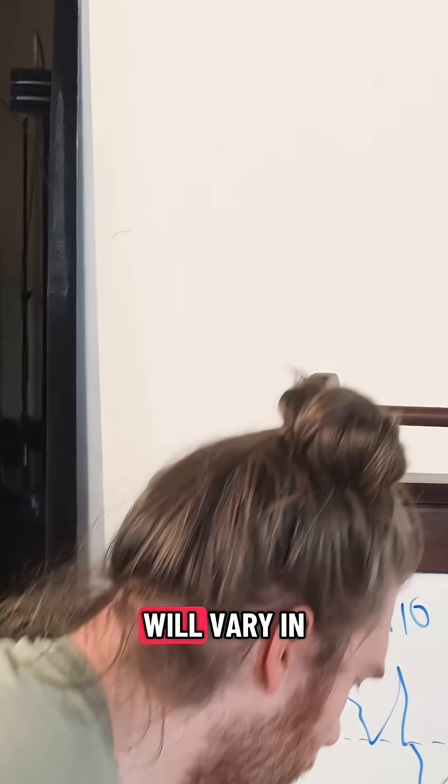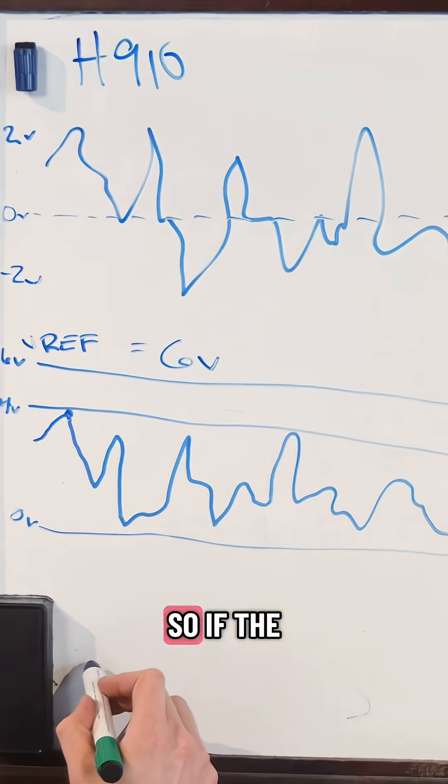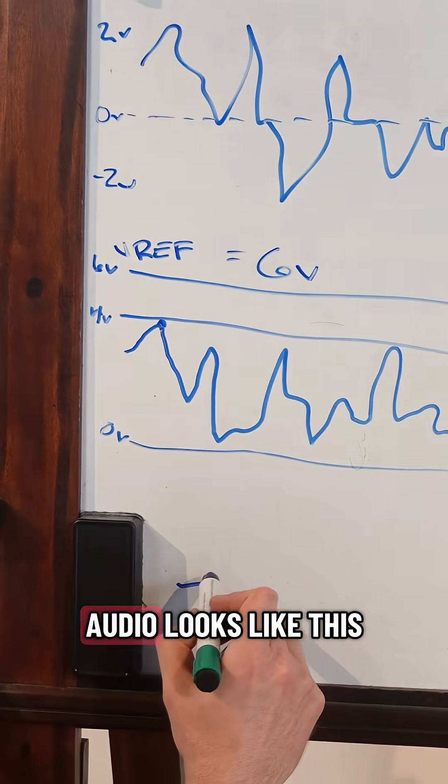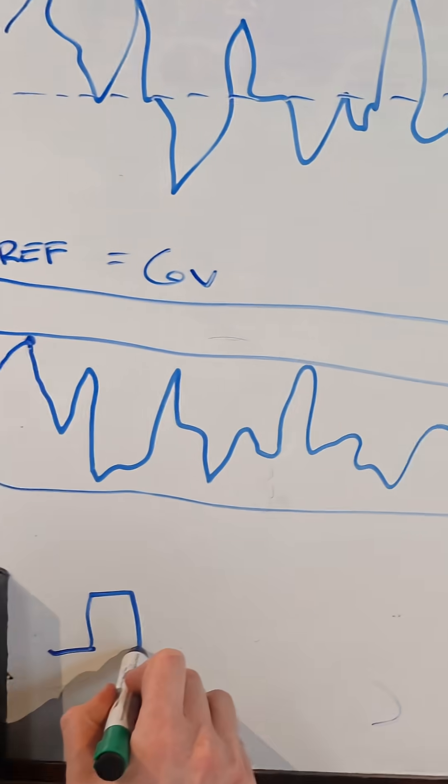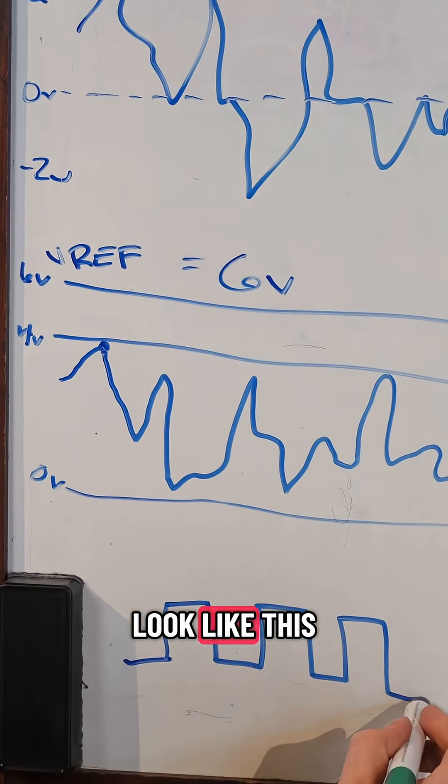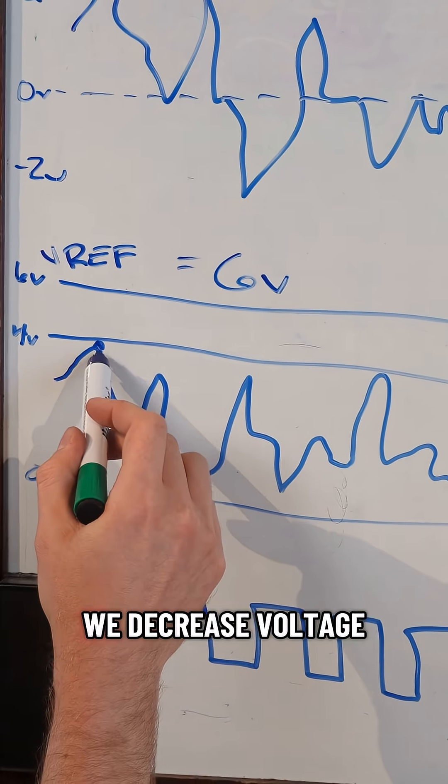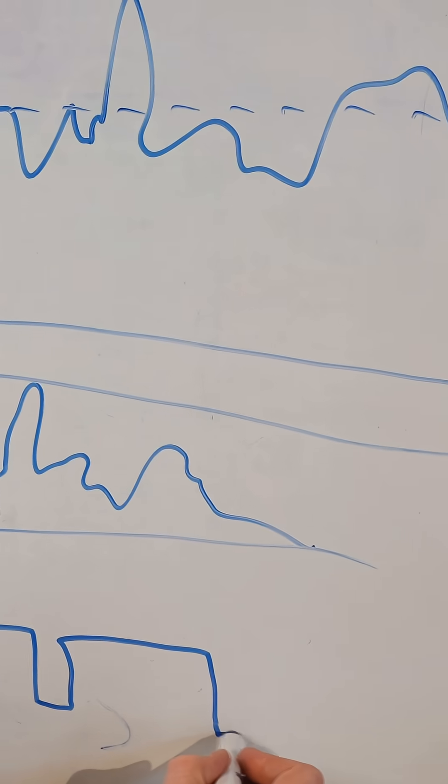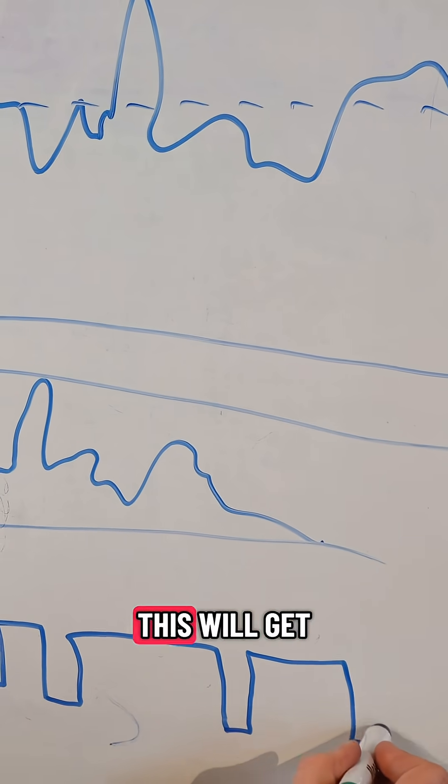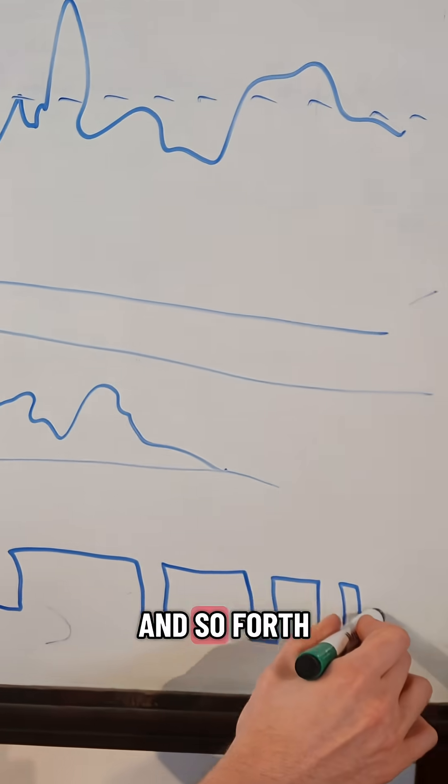The pulse will vary in width at the output of this comparator. So if the pulse with no audio looks like this, with audio, say four volts, it's going to look like this. And then as we decrease voltage, this will get a little bit skinnier, this will get skinnier, this will get skinnier, and so forth.